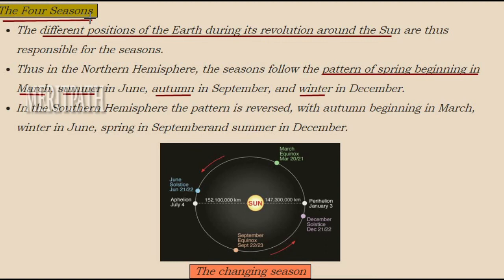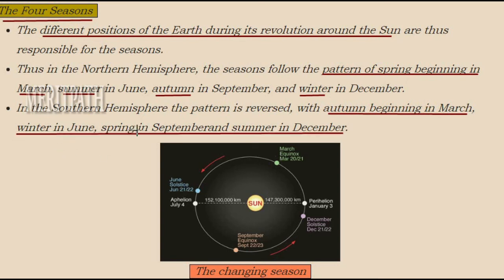Different positions of the earth during its revolution around the sun are responsible for different seasons. In the Northern Hemisphere, spring begins in March, summer in June, autumn in September, and winter in December. In the Southern Hemisphere, the seasons are reversed: autumn begins in March, winter in June, spring in September, and summer in December. In this image we can see the different seasons changing due to earth's revolution, including the December solstice, June solstice, and the equinoxes.